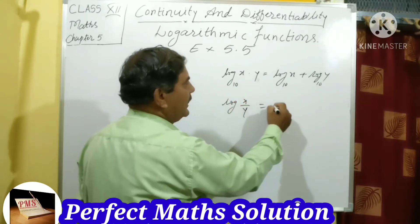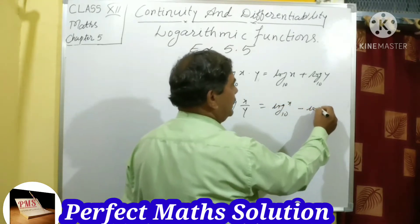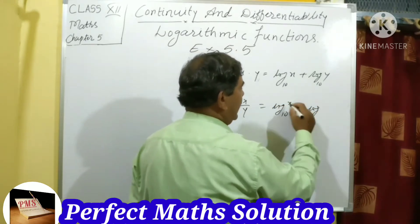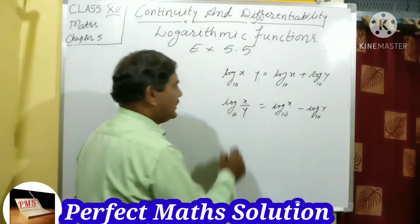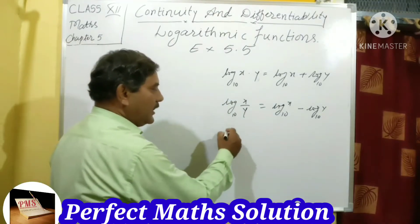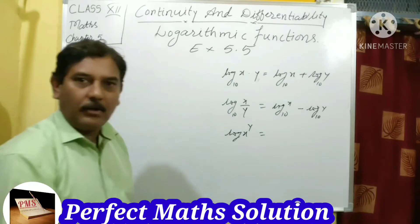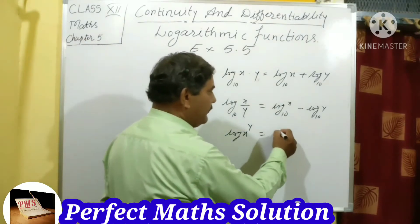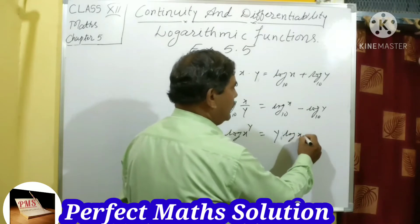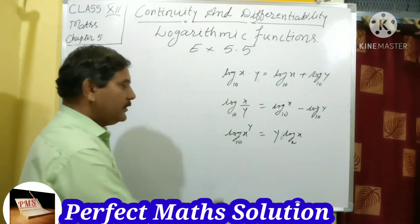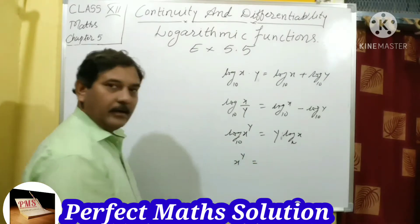So log x to the base 10 minus log y to the base 10, if base is 10. Third formula: log(x^y) — log x to the power y is equal to y into log x, that is y·log x to the base 10. And the fourth one: x to the power y can be written in the form of log.